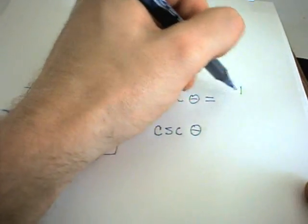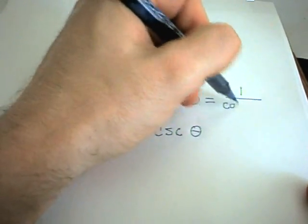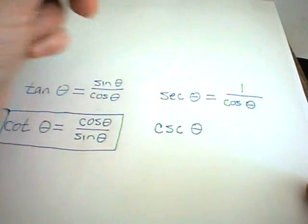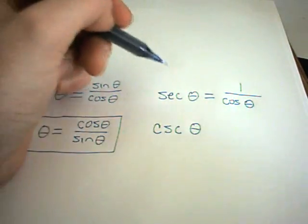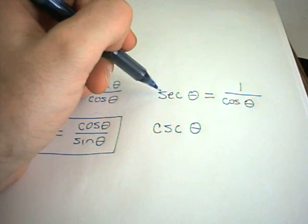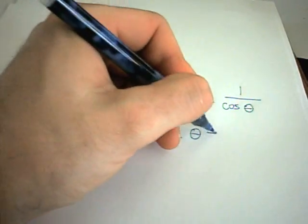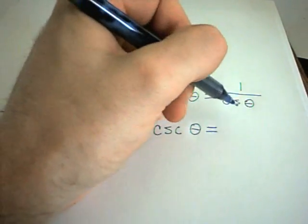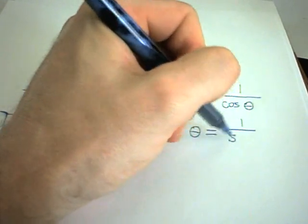Secant of theta is one over cosine of theta. So to me, I always remember it was kind of opposite. There's sine and cosine. The S goes with the C. Cosecant of theta is one over sine of theta.